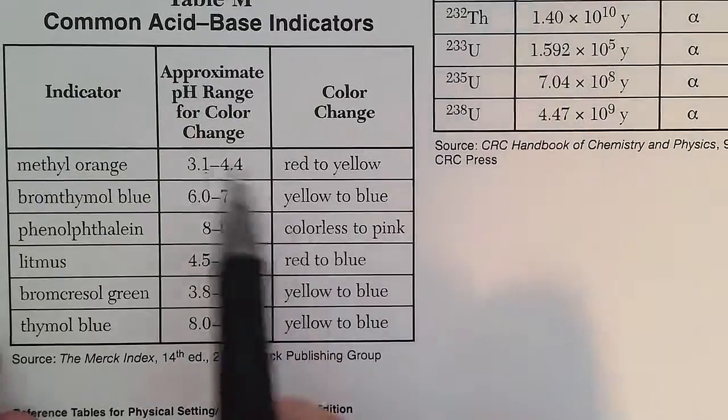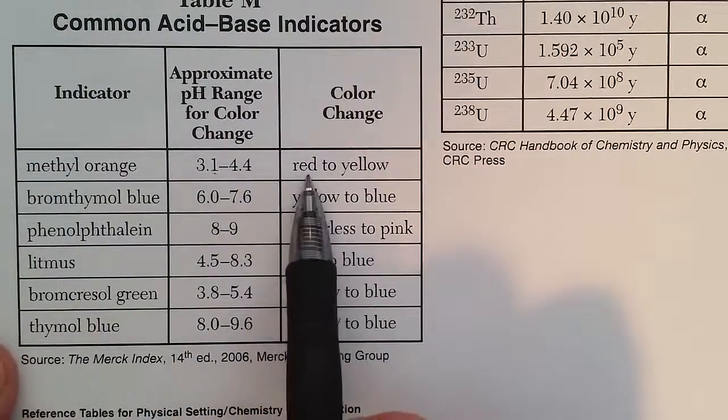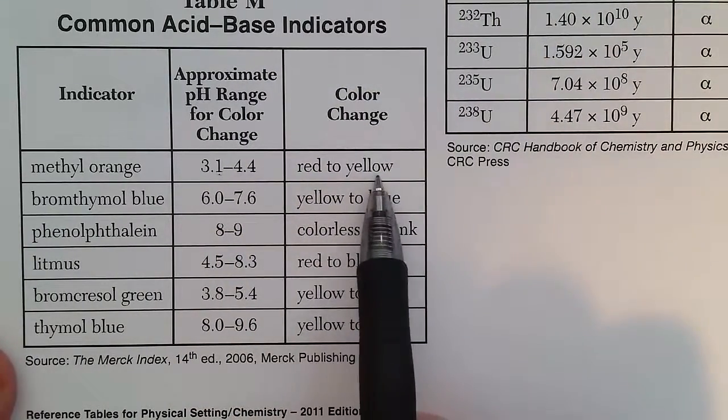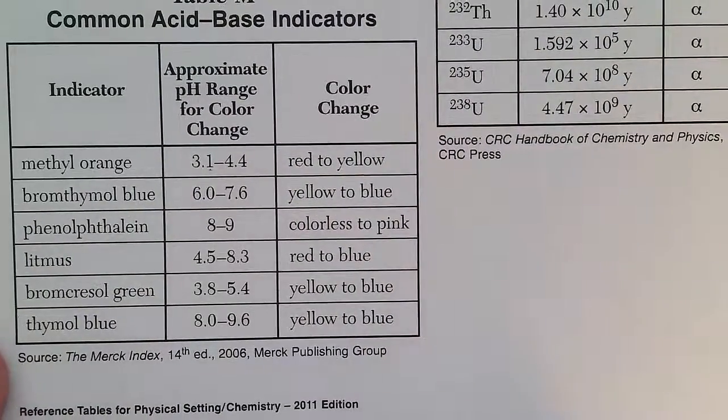So your indicator is below the lower range for each one, it will be the color on the left. Higher than the upper range for each one, it will be the color on the right. And between, it will be some sort of mixture.